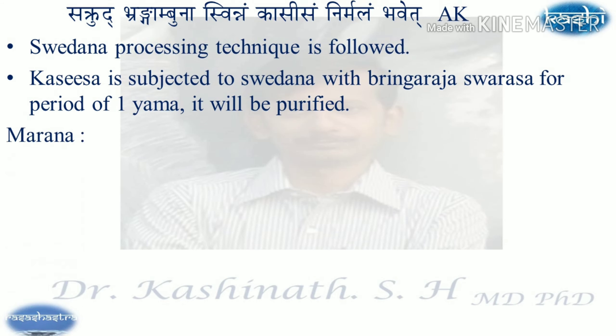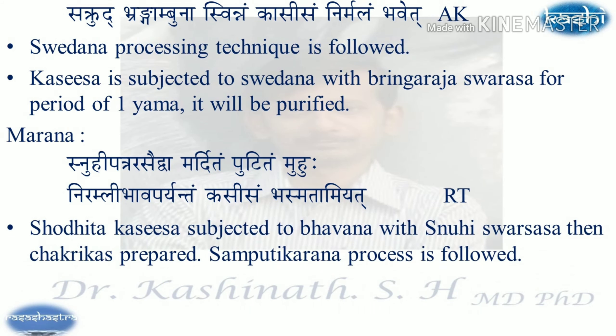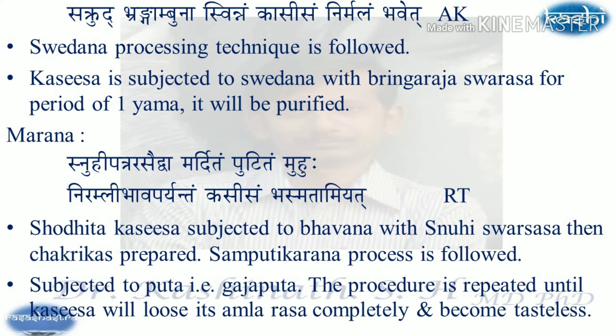For Marana, as per Rasatrangini: 'Snuhi Patra Arsaitpa Marditam Putitam Mohu, Mirambli Bhavapariyantam Kasesam Basmatamiyad.' Shodhita Kasesa is subjected to Bhavana with Snuhi Swarasa and made into Chakrika, then subjected to Buddha (Gajaputta). The procedure is repeated until Kasesa completely loses its Amlatpa Rasa and becomes tasteless.